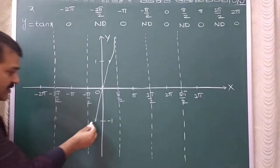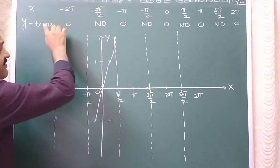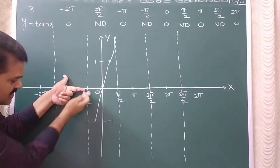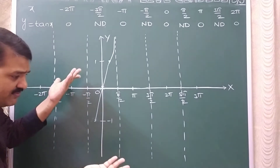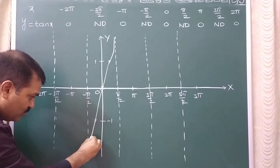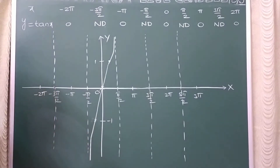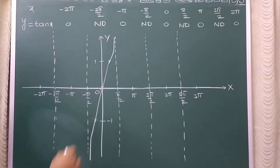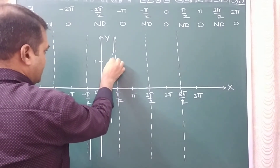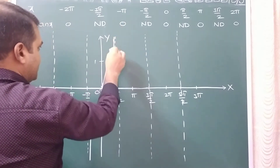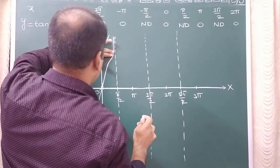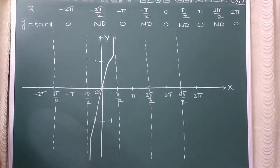At minus pi by 2 also, y is not defined - the point will be somewhere at minus infinity. We don't know where the point is, so we extend indefinitely in that direction. So the shape of the curve between minus pi by 2 and pi by 2 looks like this.